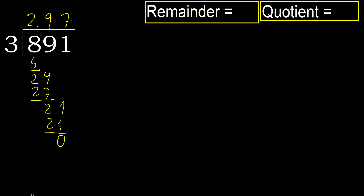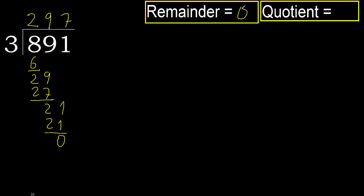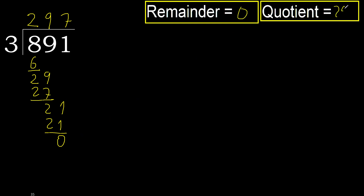There is no next number, therefore finish it. The result is 0 remainder, therefore 891 divided by 3 is here. Over.